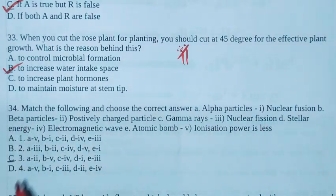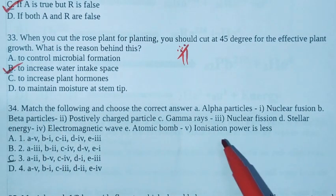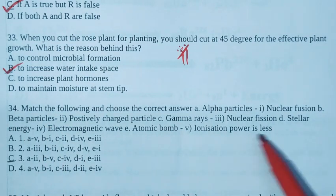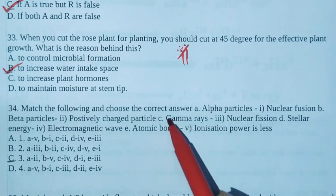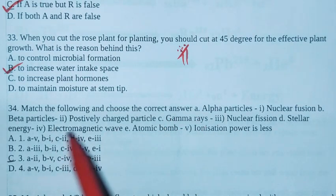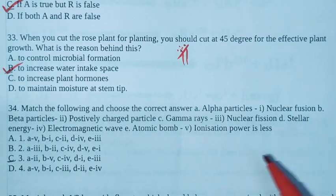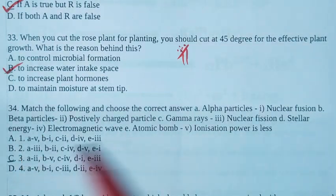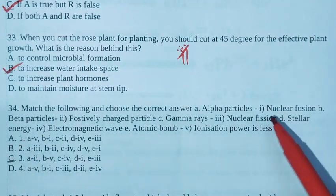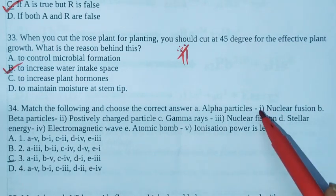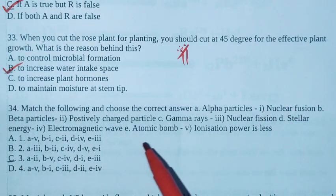B is beta particles. Beta particles have less ionization power. So B equals 5. Next C is gamma rays. Gamma rays are electromagnetic waves, so C is fourth. D is stellar energy. Stellar energy comes from nuclear fusion. D is 1.